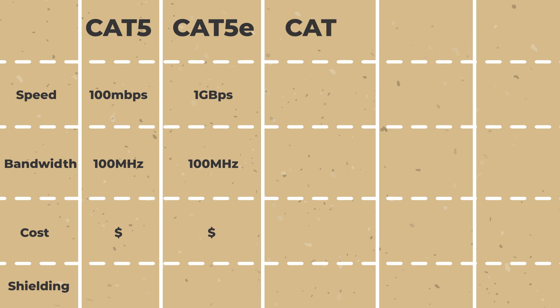Category 6, or CAT 6, is upgraded from the previous cables, has 1 gigabit per second capabilities, and a max bandwidth of 250 megahertz, and is not too pricey.